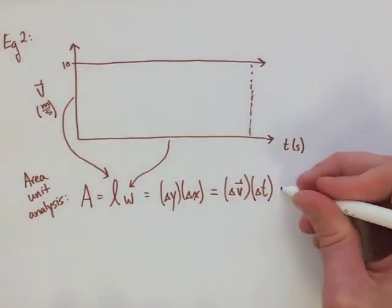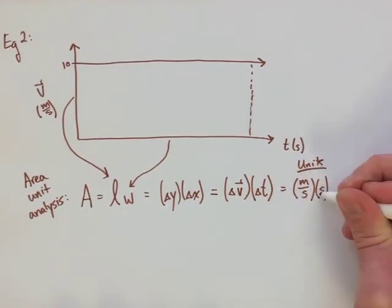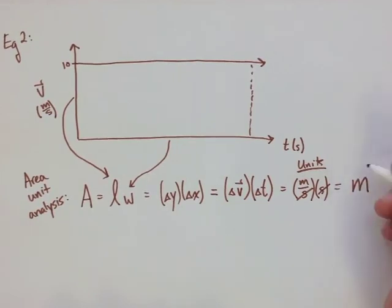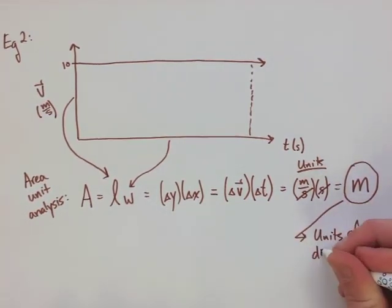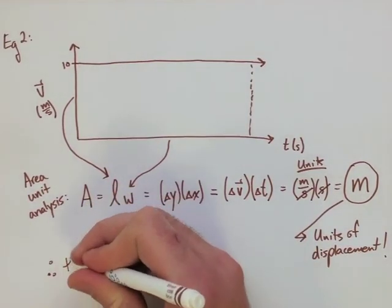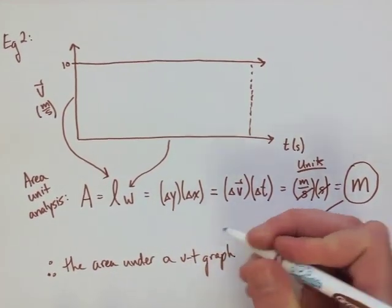When we look at the units, we again end up canceling out the units for velocity, and then making them into the units for displacement. We're left with meters here, which is our unit of displacement. So, the area under our velocity-time graph is equal to the displacement of the object that we're looking at.